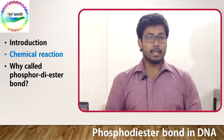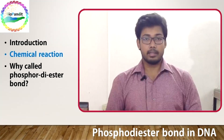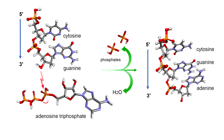DNA and RNA are composed of nucleotides that are linked to one another in a chain by chemical bonds called the ester bonds.